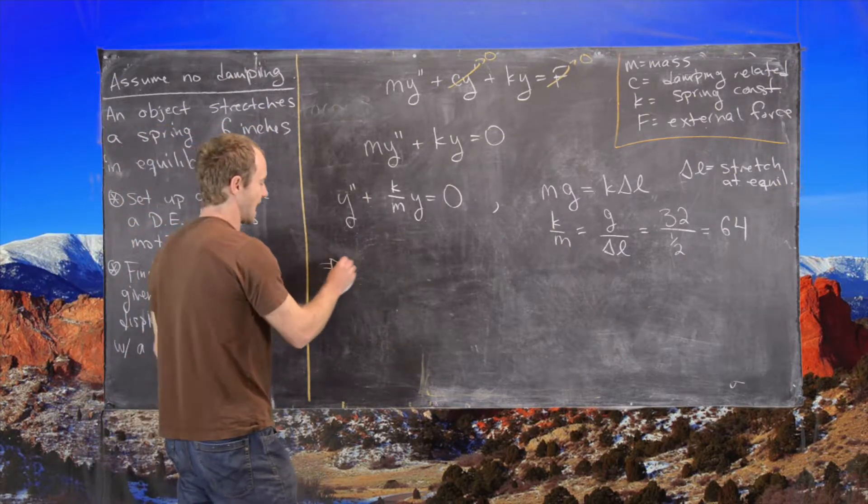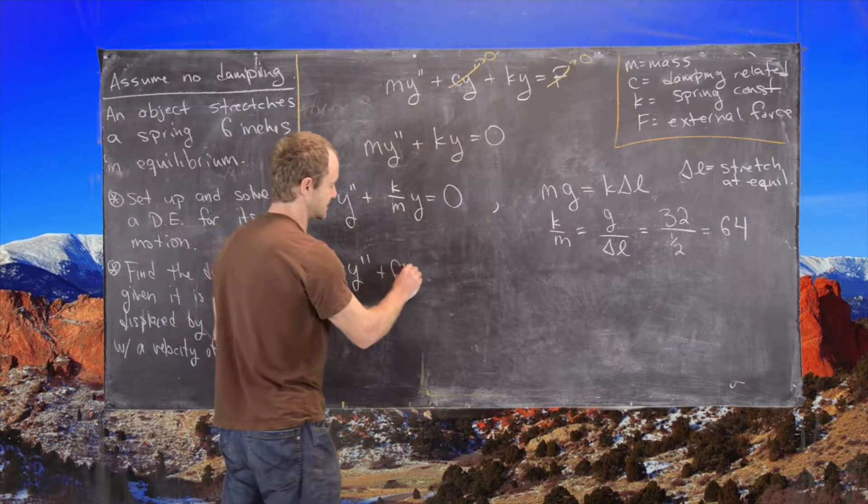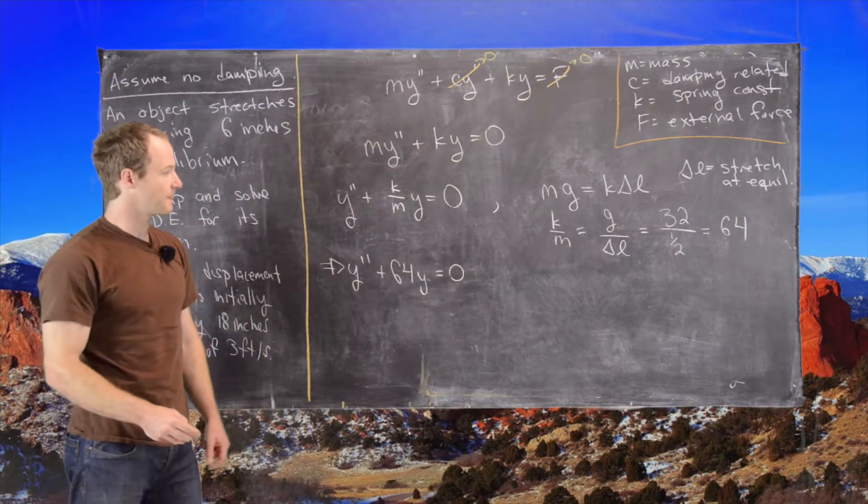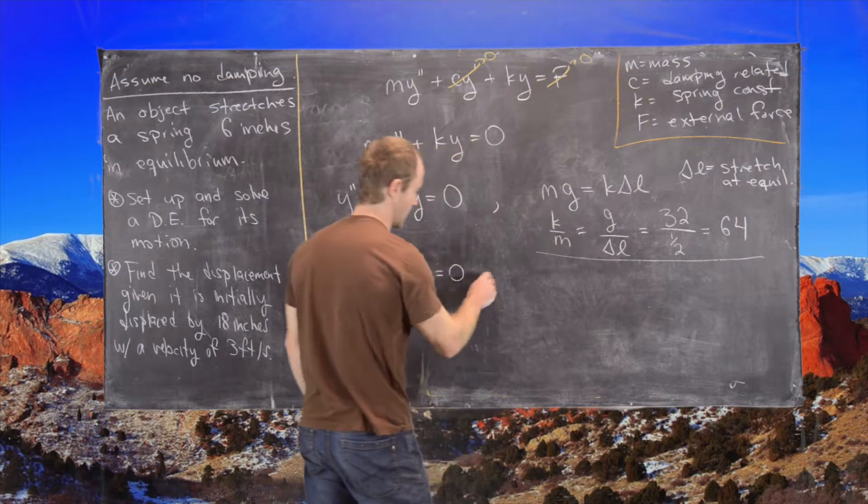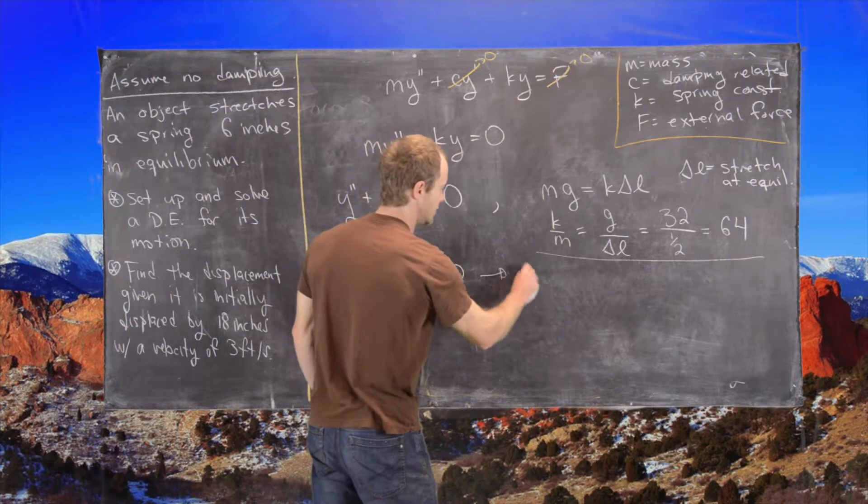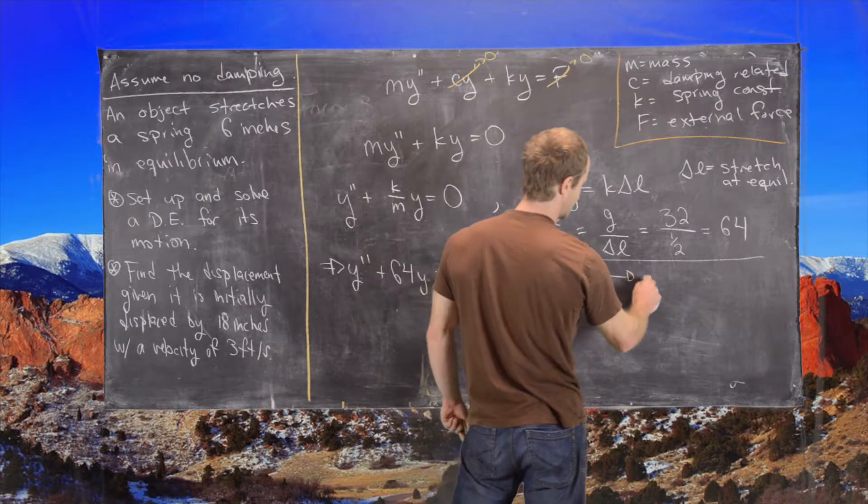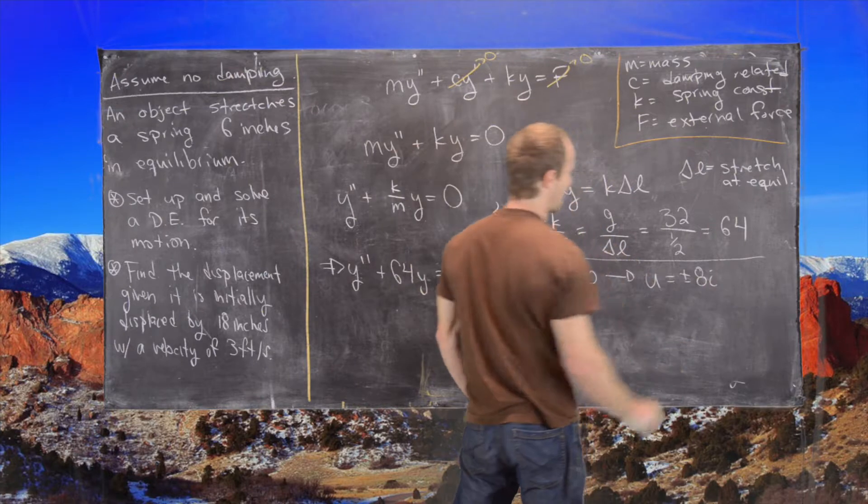Great. So that means we have the differential equation y double prime plus 64y equals 0. Great. And in order to solve that, we need to look at a corresponding polynomial: u squared plus 64 equals 0, which that obviously has roots u equals plus minus 8i.